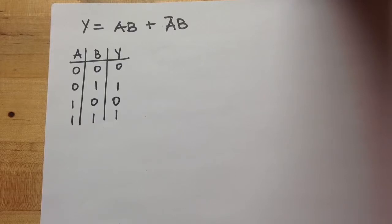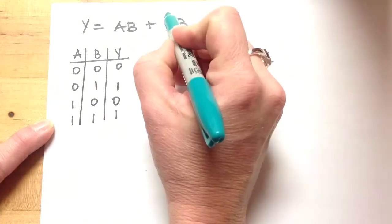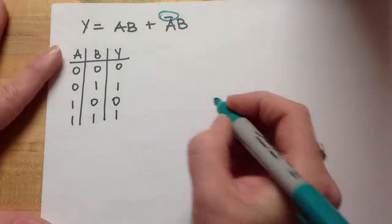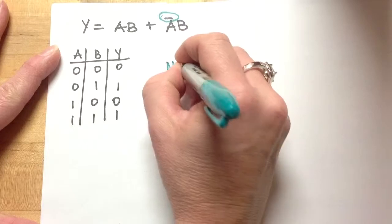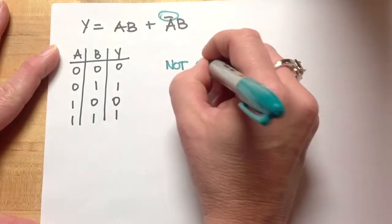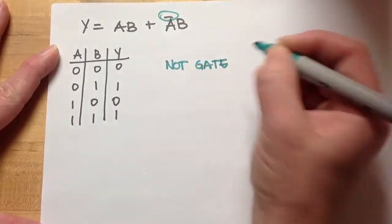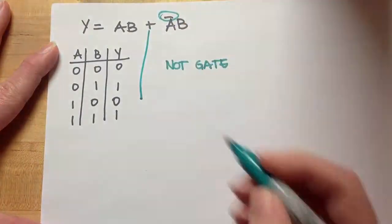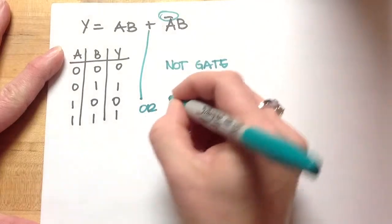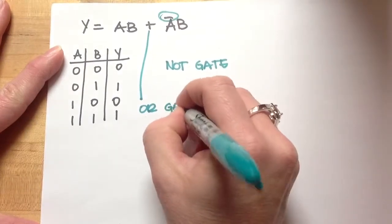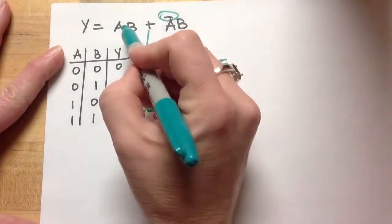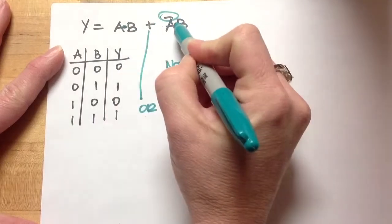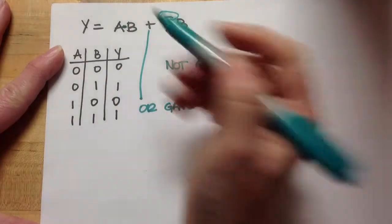So let's break down what gates there are here. First of all, we have a not A, so we're going to have a not gate. Here we have a plus sign, so that's going to be an OR gate. And here, and here, we have AND gates.